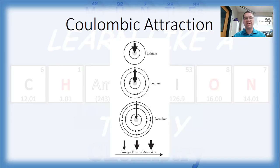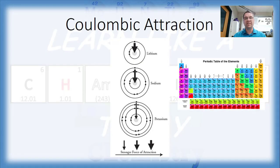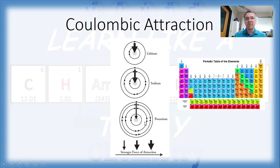Looking at specific examples from the periodic table — lithium, sodium, and potassium all fall in the first column, the alkali metals. Lithium has three electrons: two fit into the first energy level, and the third begins a second energy level. Sodium has 11 electrons: two in the first level, eight in the second, and the eleventh begins the third level. Potassium has 19 electrons: two in the first, eight in the second, eight in the third, and the 19th electron goes into the fourth level.